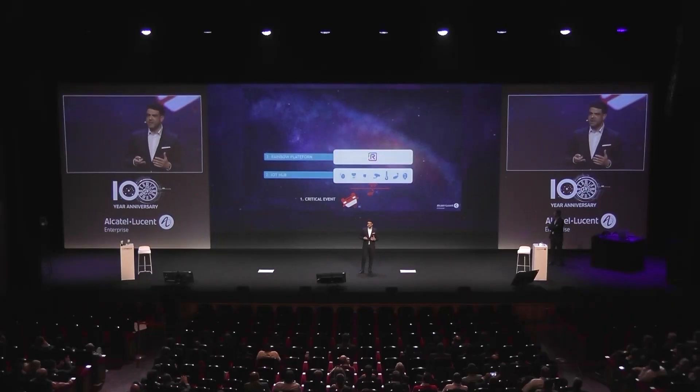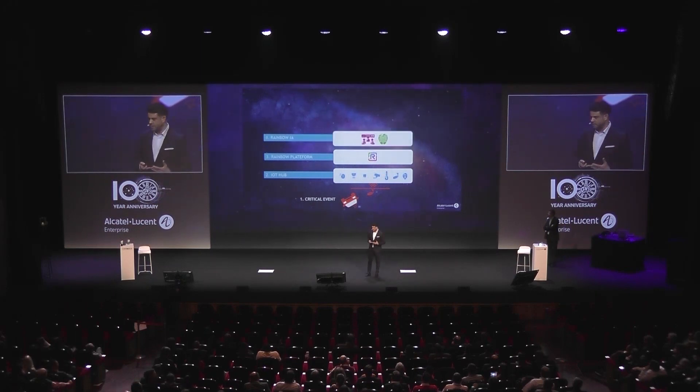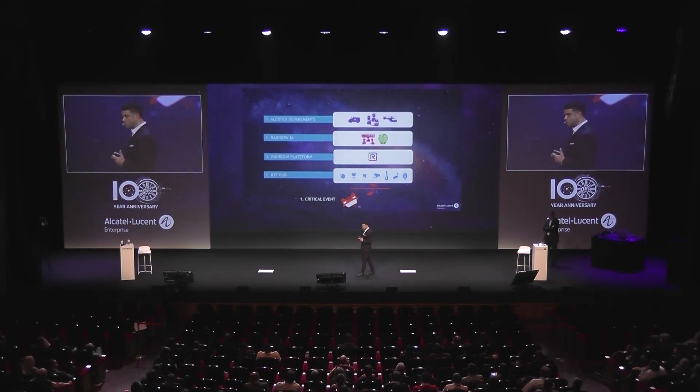The demo we're going to check is how to manage a car accident in a city — a smart city approach. When something happens, we have IoTs — cameras, sensors — that detect events, and one of them could be a car accident. We get that event and put it into Rainbow Platform. We then inject artificial intelligence to understand what is going on, and once we understand, we create a bubble — a collaboration area — putting in the people that will fix the problem.